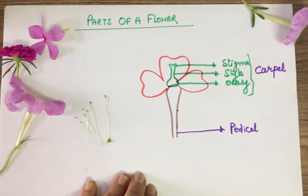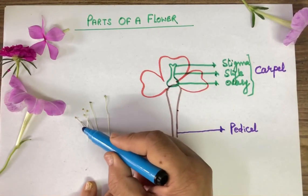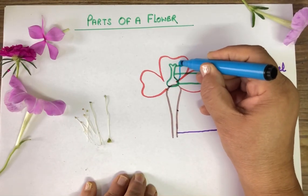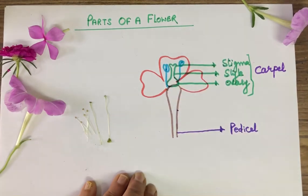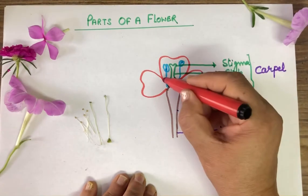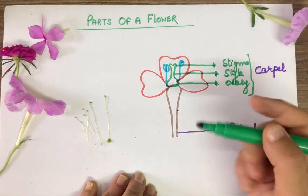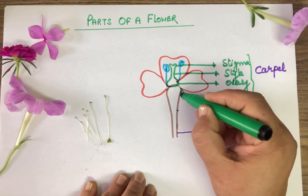Now comes the male part of the flower. I have shown you these five — this is the male part. You can draw it like this. Now one part left — that is sepals. You can draw them like this.